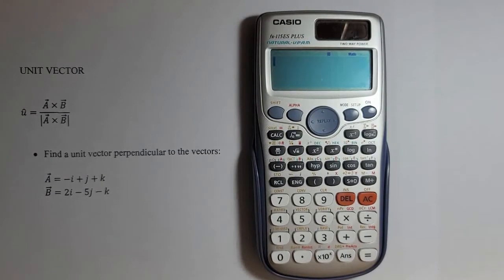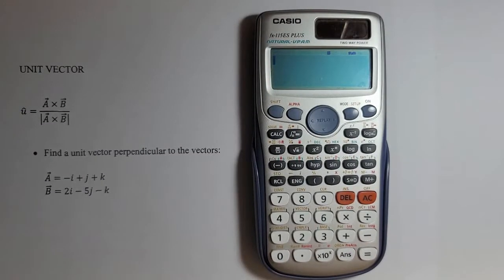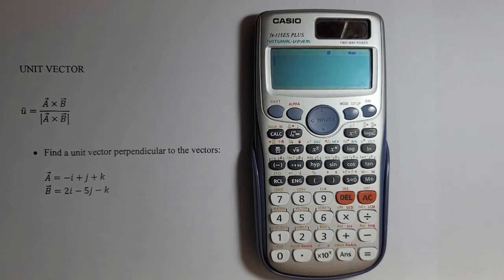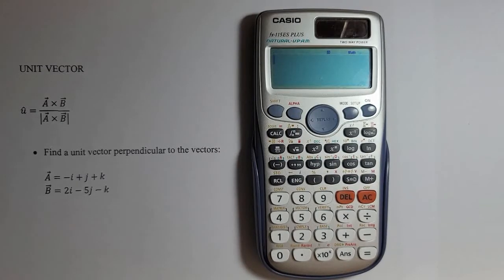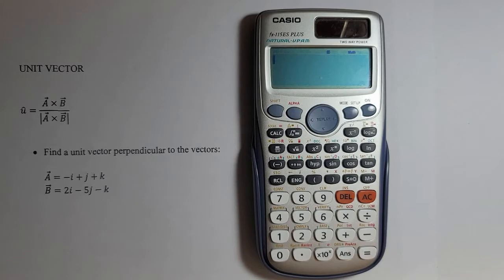Welcome everyone! In this video, I'm going to show you how to find a unit vector perpendicular to the plane defined by two vectors using the Casio calculator. Here are the vectors: vector a equals -i + j + k, and vector b equals 2i - 5j - k.